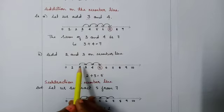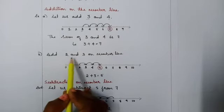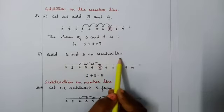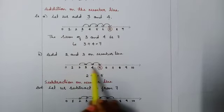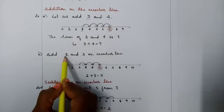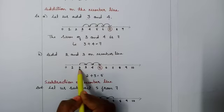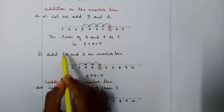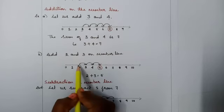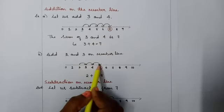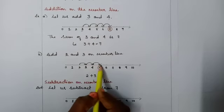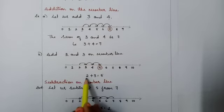Let us consider one more example to add 2 and 3 on the number line. The first number is 2, so we start from 2. The next number is 3, so we move 3 steps: 1, 2, 3. Our answer is 5. That is 2 plus 3 equals 5.